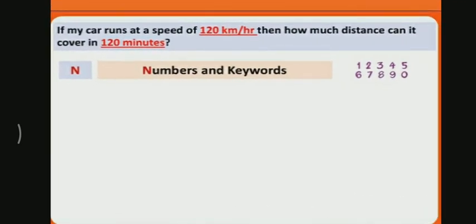We will follow the NARDOS to solve this question. N means numbers and keywords. There are two numbers and keywords in this question: 120 km per hour and 120 minutes.